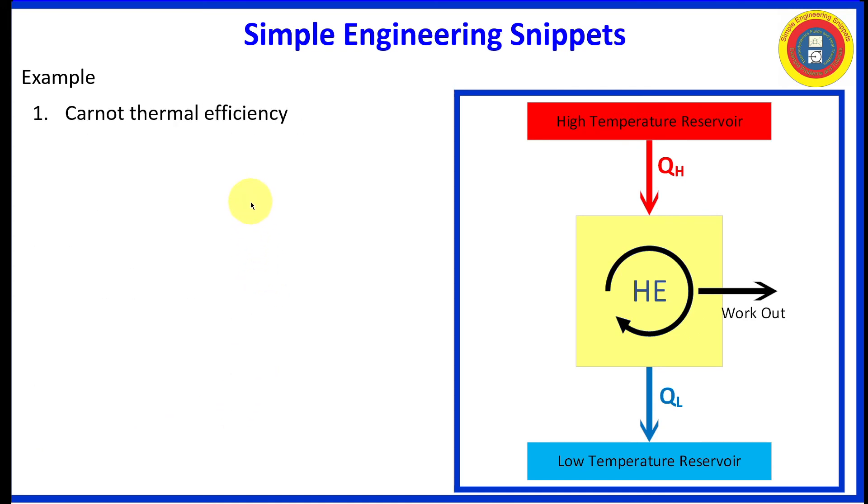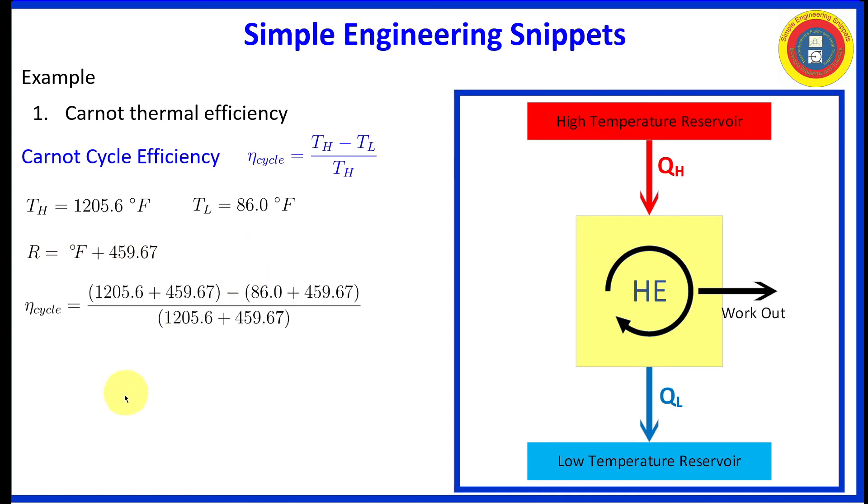Calculating the Carnot efficiency, pretty straightforward. Keep in mind to convert to absolute, we add 459.67 to degrees Fahrenheit, getting Rankine. Doing the algebra, plugging in the numbers, and we get our cycle efficiency of 0.672 or as we typically say 67.2% efficient. So that is the answer for part one. This is the best efficiency for any heat engine operating between these two reservoirs.